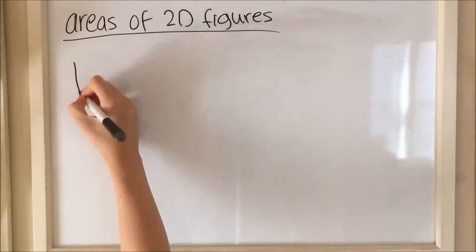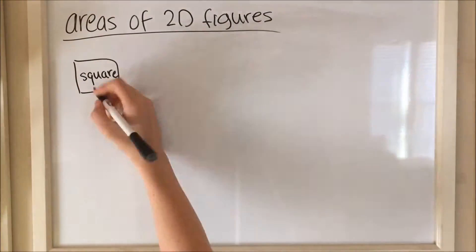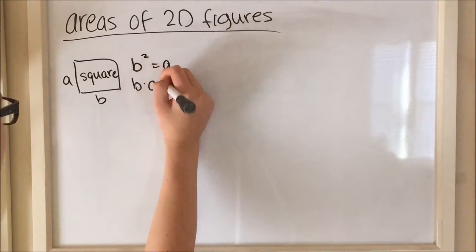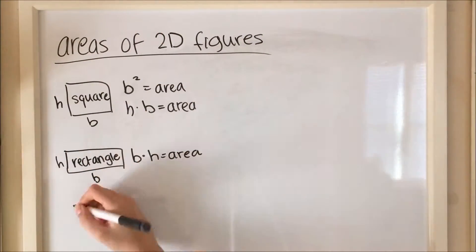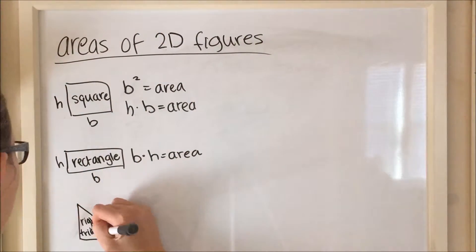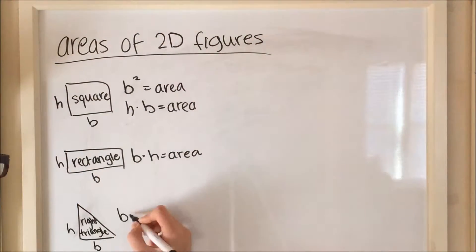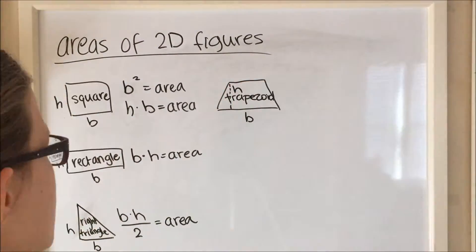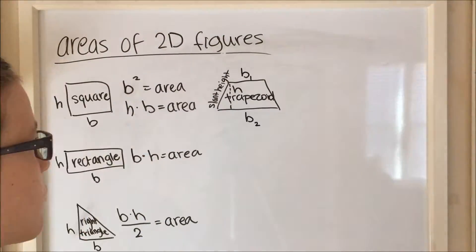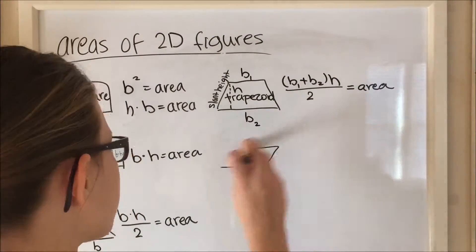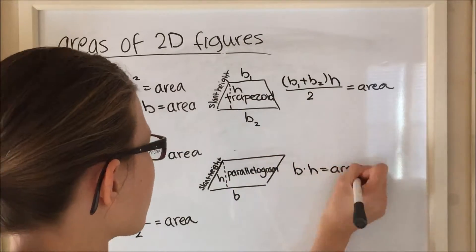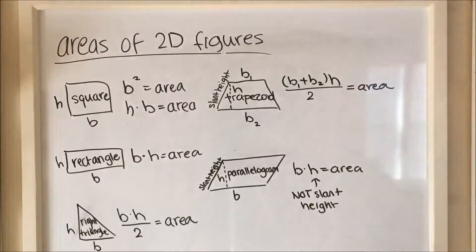The first part is going to be a review of the areas of basic 2D figures like the square, the rectangle, right triangle, trapezoid, parallelogram, and a circle. Make sure you use the height, not the slant height, for the parallelogram and the trapezoid.